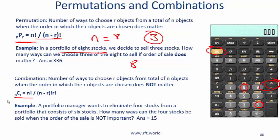With combinations the order does not matter. So if you are doing a 6 C 4 then you do a 6, 2nd, and NCR is right here, and then 4. So use your calculator.